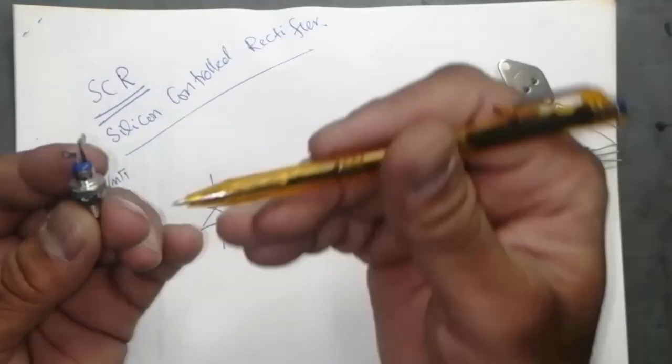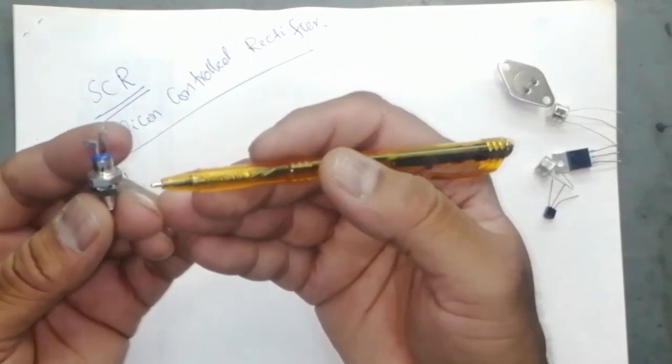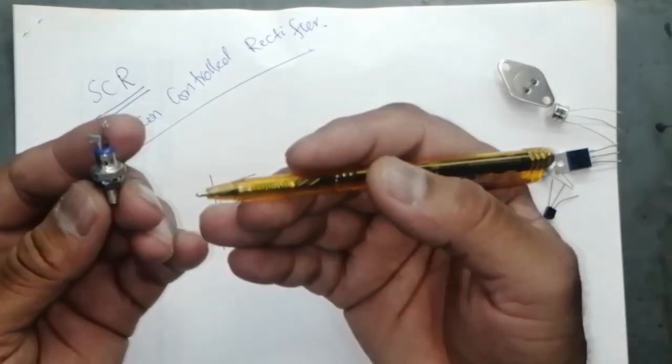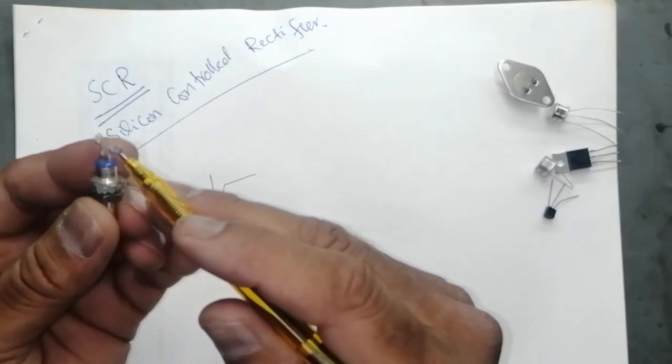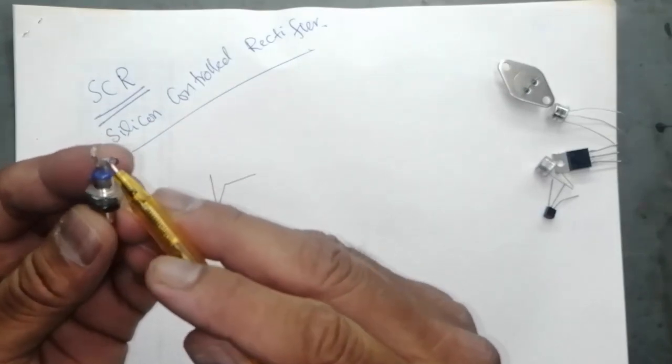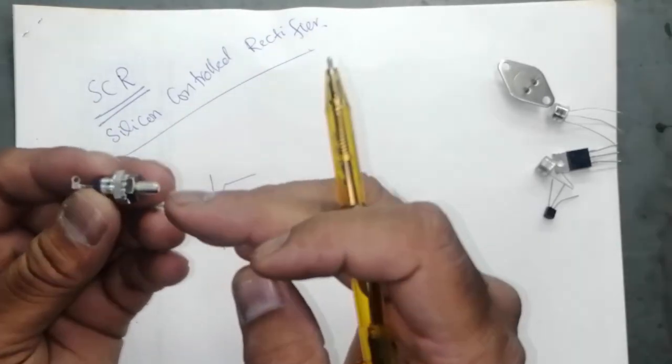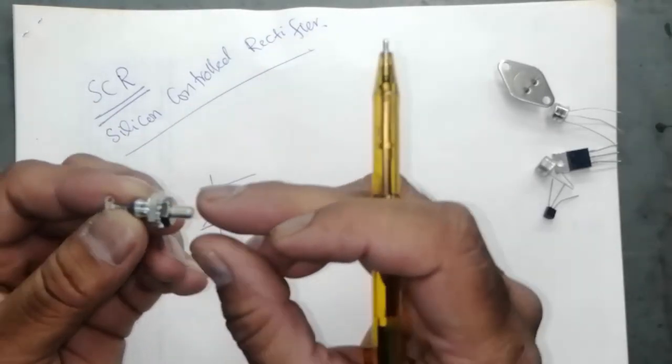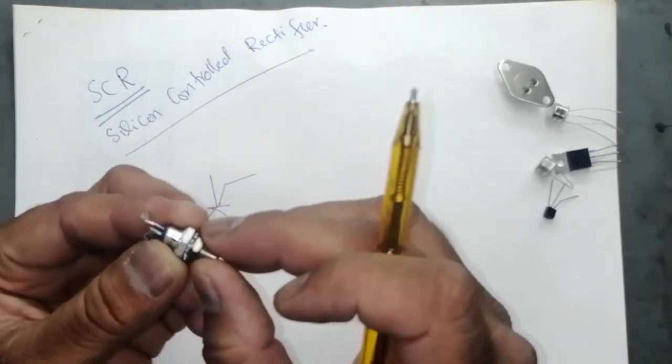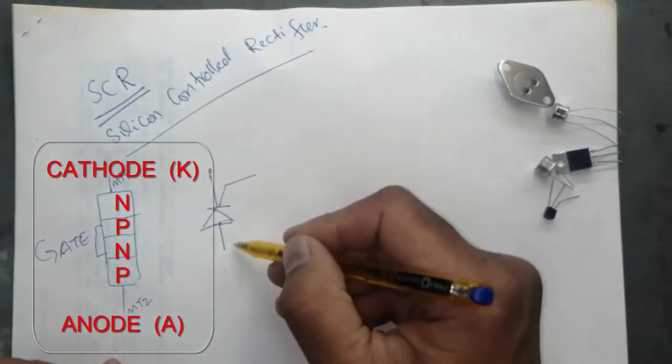If we see the component itself, it looks like this: one terminal is small, the second terminal is long, and the third terminal is the body or the mounting body. It is connected as a safety device.